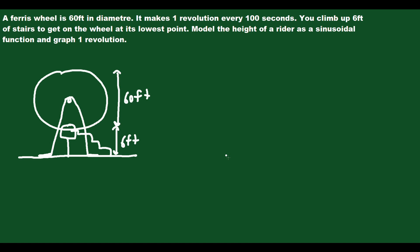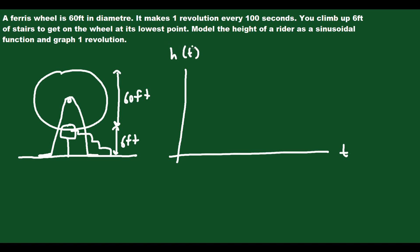I like to make the graph first. They ask you to graph one revolution after, but I find it easier to make the graph and then make the equation. We'll make our axes — this will be t, and this will be h(t), your height at a particular time in seconds. So when you enter the ride, you get on at a height of 6. You start off at a height of 6, and your maximum height is 60 feet above where you enter. Well, you're already 6 feet off the ground, so 6 plus 60 means you're 66 feet off the ground at the very top. So that's your maximum height.